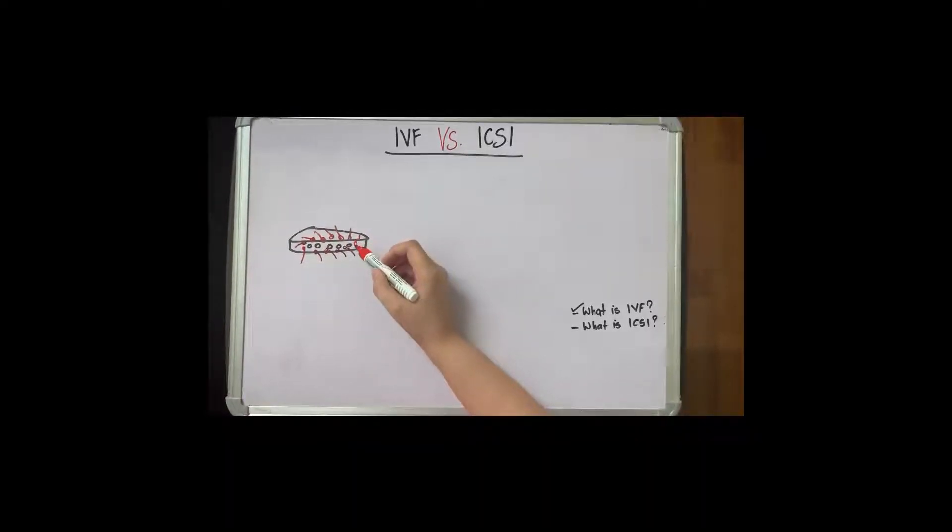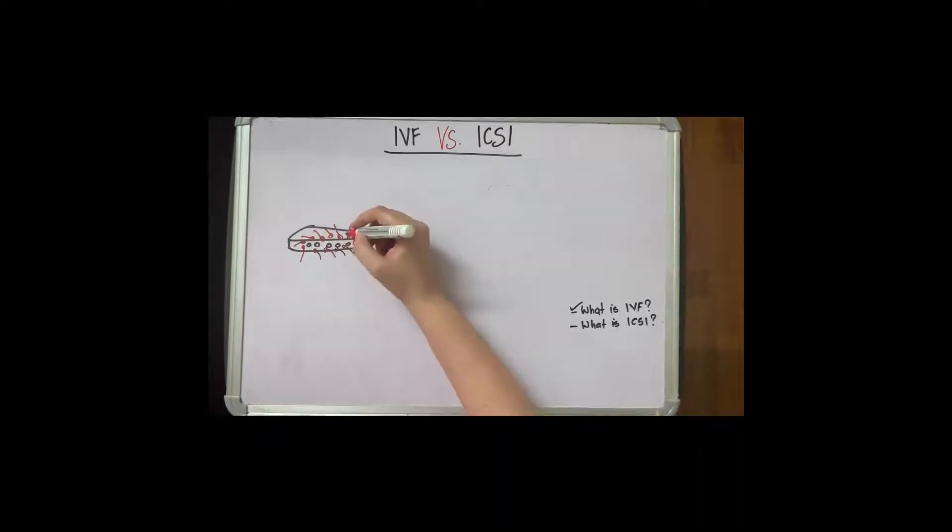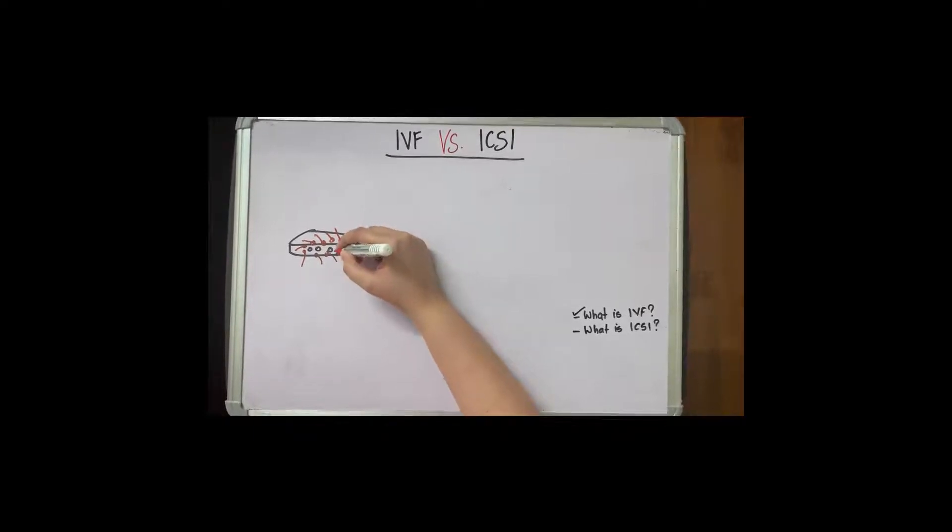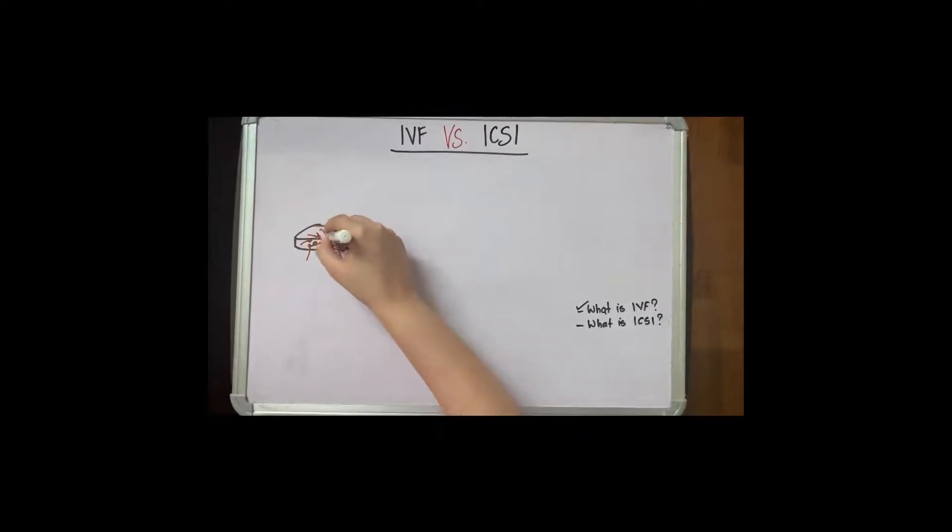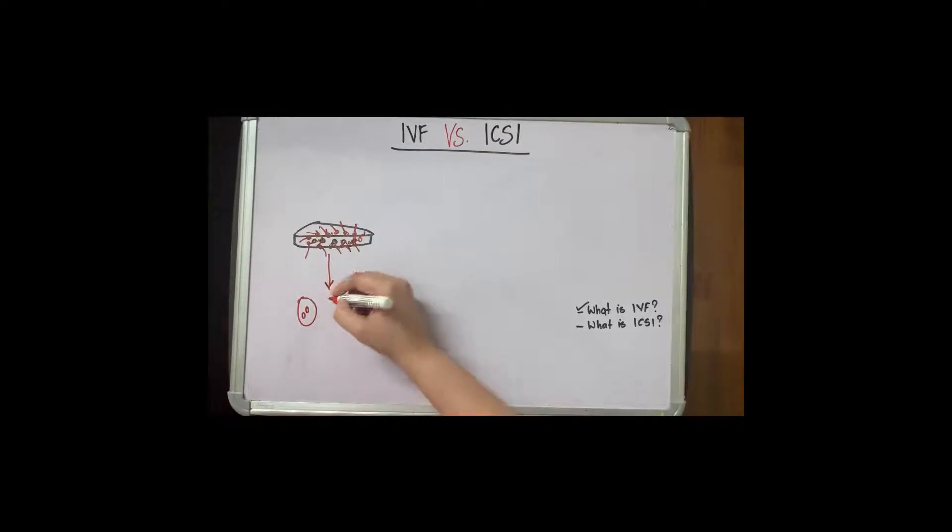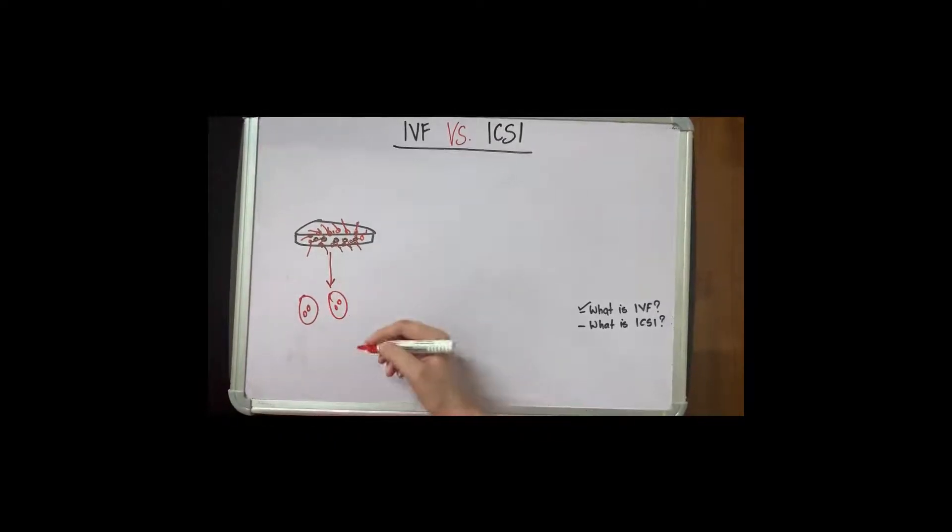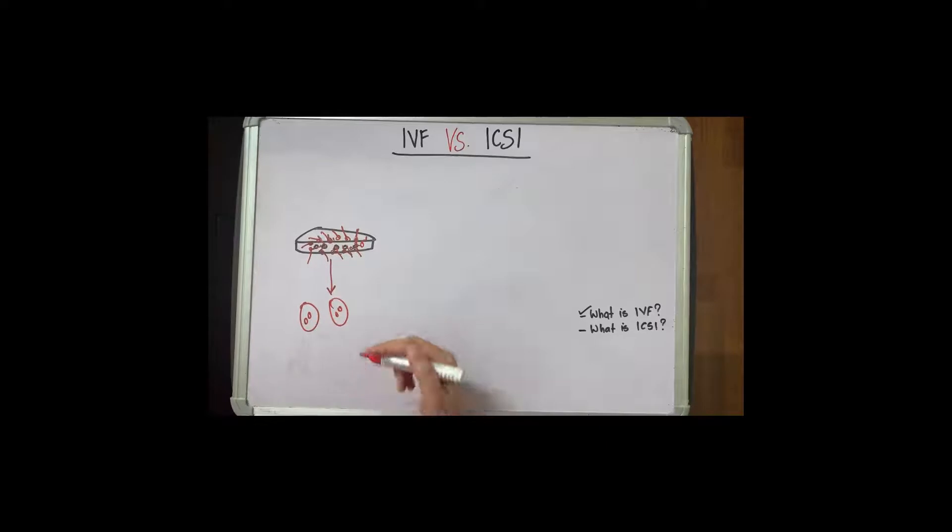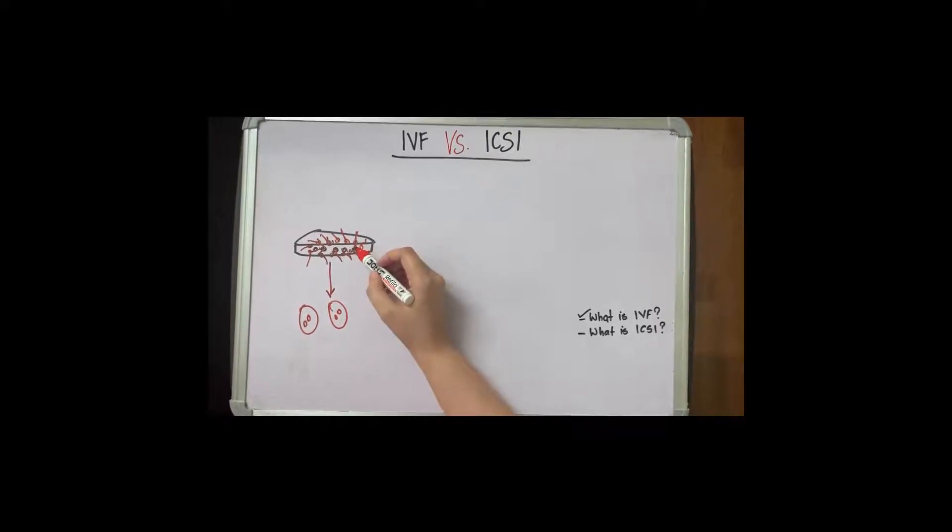This is more how natural conception happens. The egg naturally selects the sperm for fertilization. When we come in the next day, we can see how many eggs have been activated. This depends on the quality of the sperm and oocytes. In this technique we don't get a lot of information because whatever eggs are retrieved we just overlay it with the quantity of sperms.